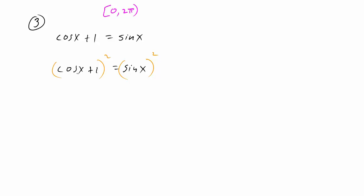On the left, squaring cosine x plus one gives us cosine squared x plus two cosine x plus one — using the shortcut: square the first term to get cosine squared x, multiply the two terms together and double it to get two cosine x, and square the last term to get one. On the right, sine x squared means we're squaring the whole quantity, so that gives us sine squared x.